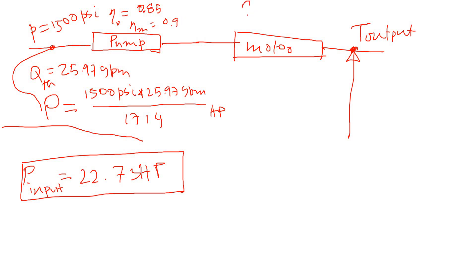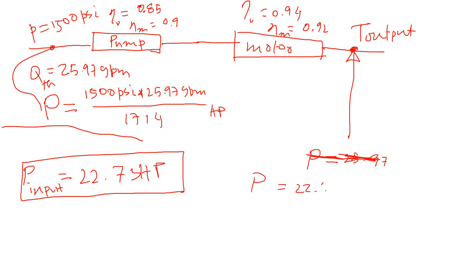The motor efficiencies were also given: volumetric efficiency of 0.94 and mechanical efficiency of 0.92. To calculate the final power output at the motor shaft, accounting for all efficiencies: 22.73 hp × 0.85 × 0.90 × 0.94 × 0.92.